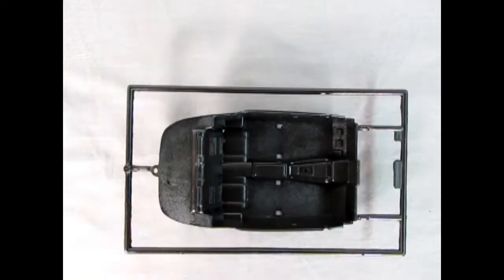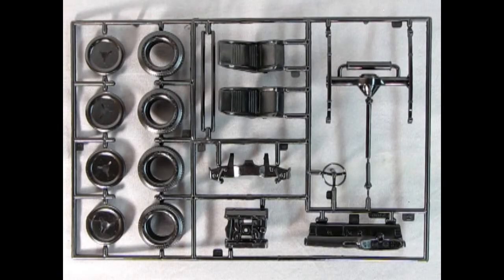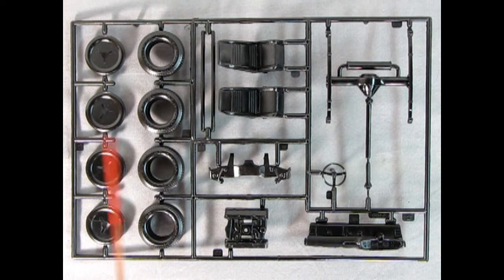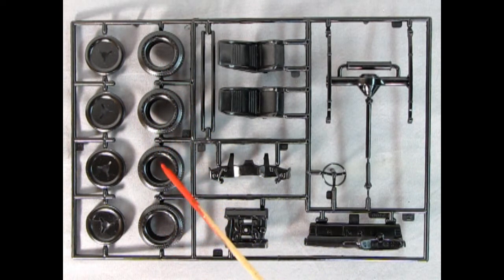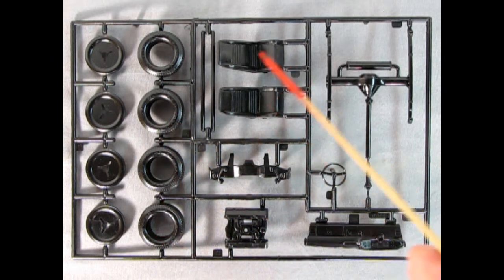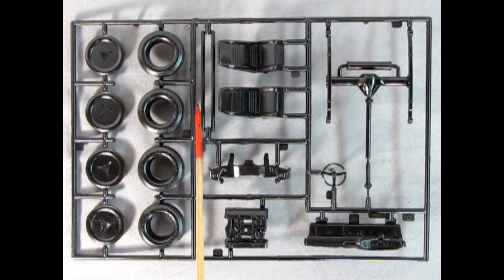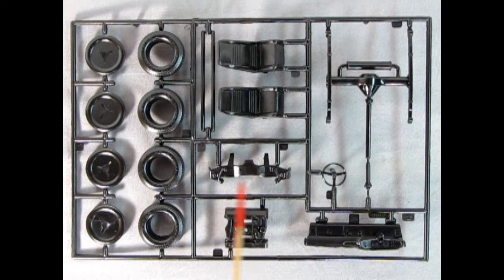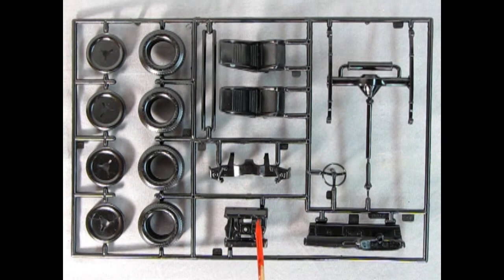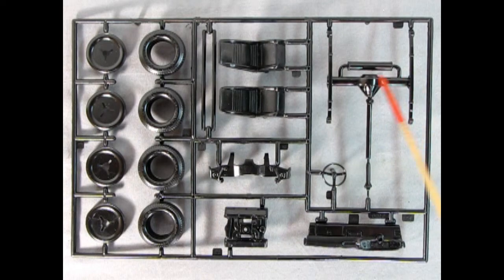Our next parts tree includes the wheels and wheel backs. These look very similar to Monogram style GT Goodyear radials. There we've got our front bucket seats, our axles, our A-arms, our engine with the valve covers, intake manifold and distributor. There's our rear axle and our steering wheel and our dashboard.